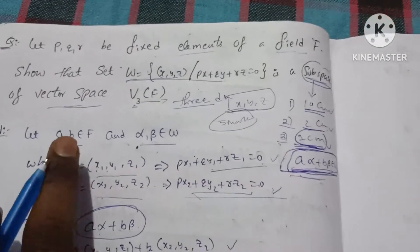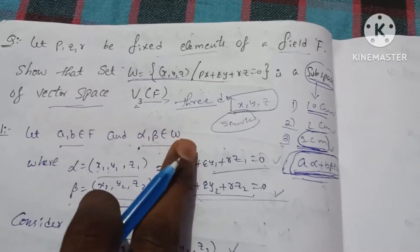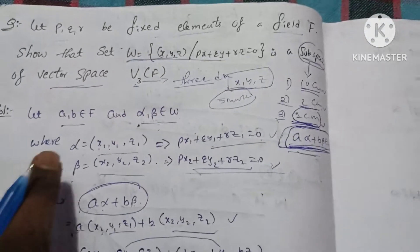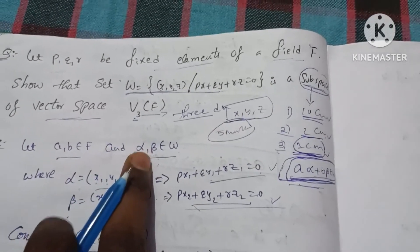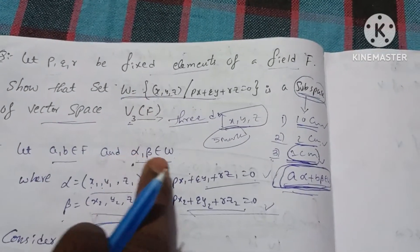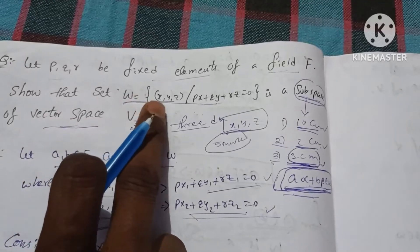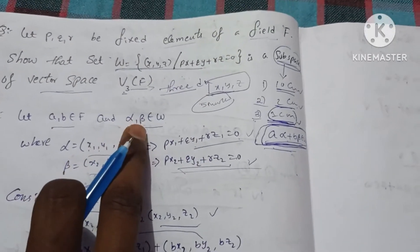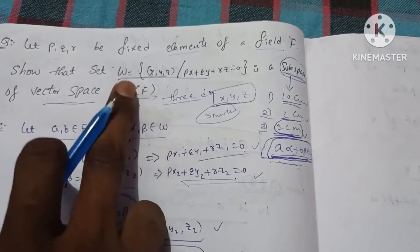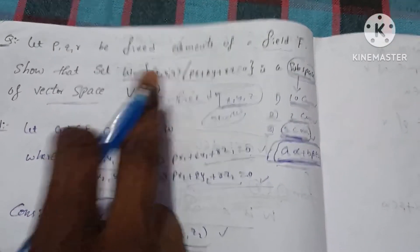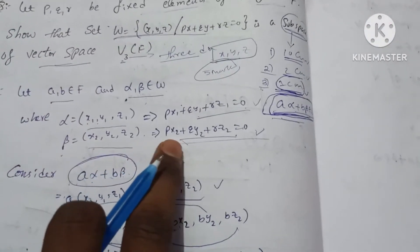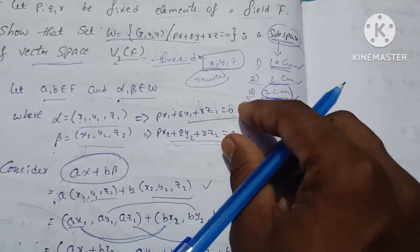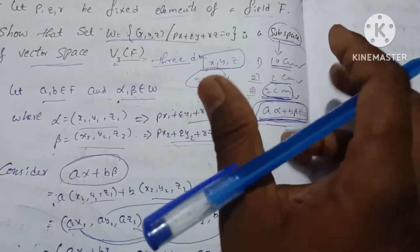Subspace has 3 conditions: 1st model is 10 conditions, 2nd model is 2 conditions, 3rd model is 1 condition maximum 5 marks. We will add the last condition a alpha plus b beta belongs to W.